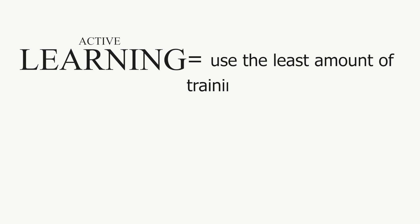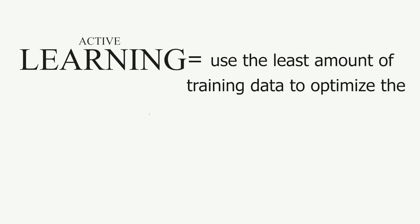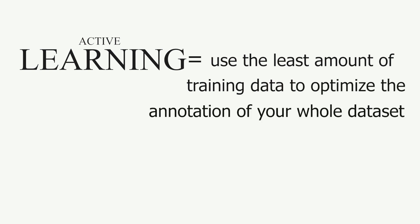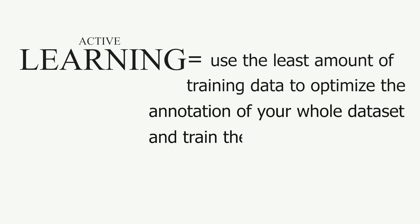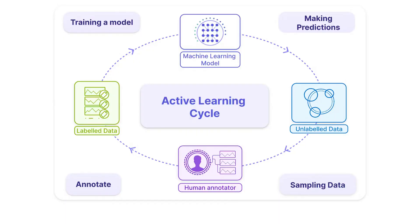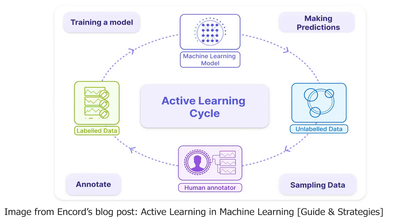What if we could have automated help building that? Well, that is where active learning comes in. In one sentence, the goal of active learning is to use the least amount of trained data to optimize the annotation of your whole dataset and train the best possible model. It's a supervised learning approach that will go back and forth between your model's predictions and your data.